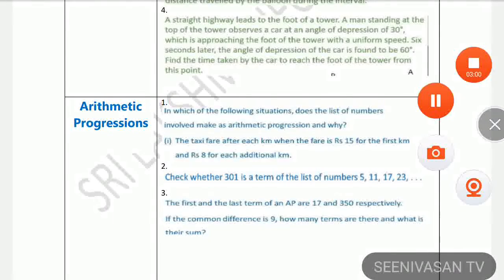This is the first question in which of the following situation does the list of numbers involved make an arithmetic progression and why? The taxi fare after each kilometer when the fare is 15 for the first kilometer and 8 for each additional kilometer.